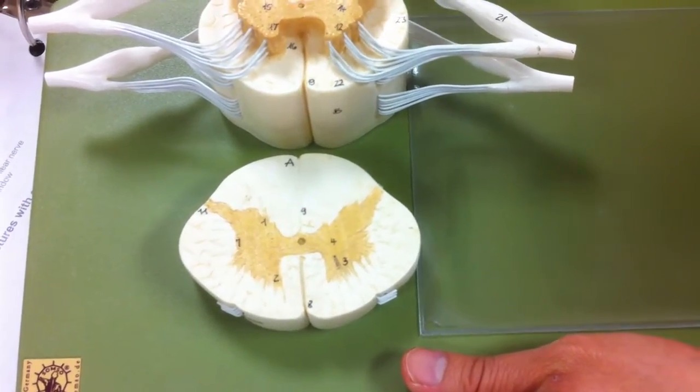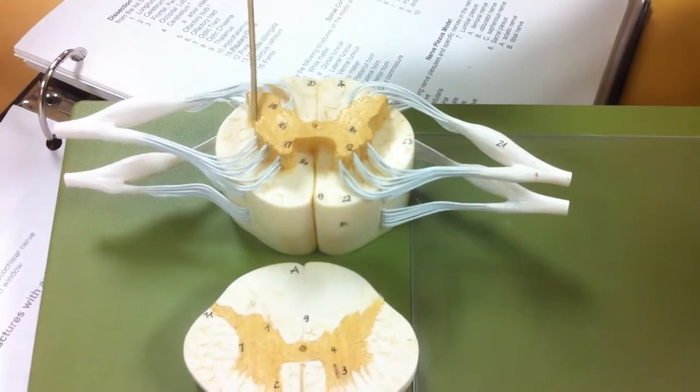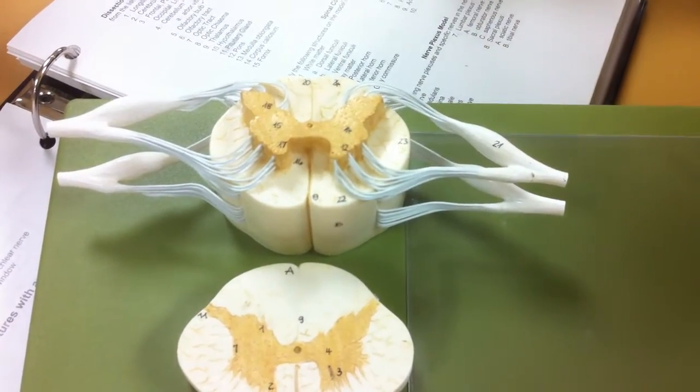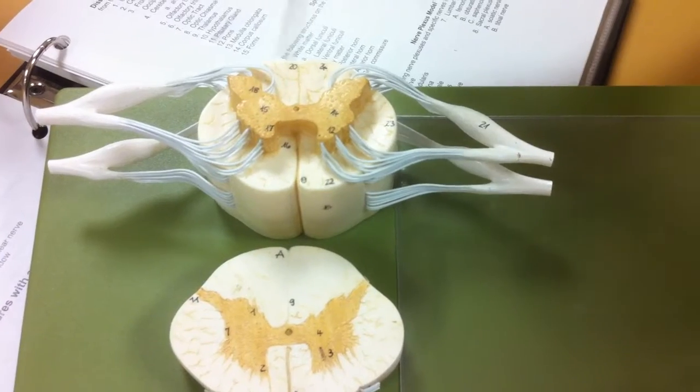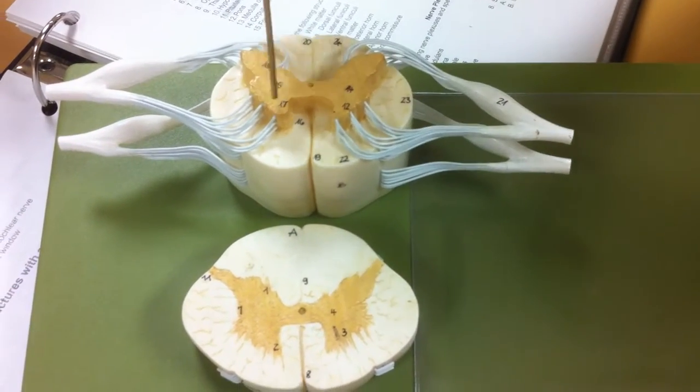The lateral horns will be these when they're here sticking out on the side. As you can tell, this looks like a butterfly. And the anterior horn in the front.